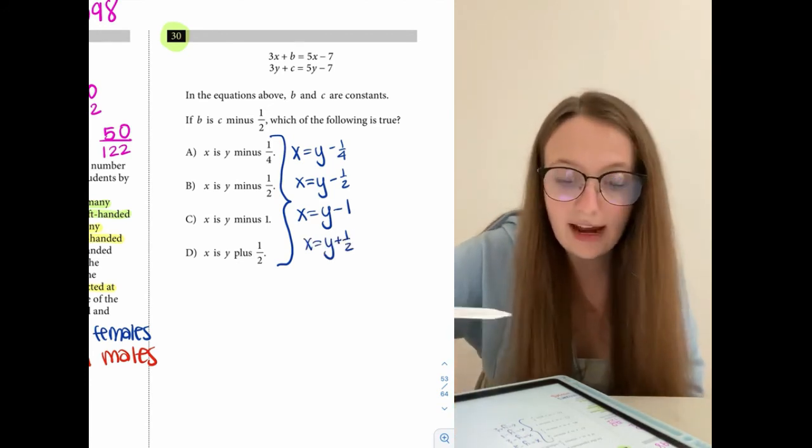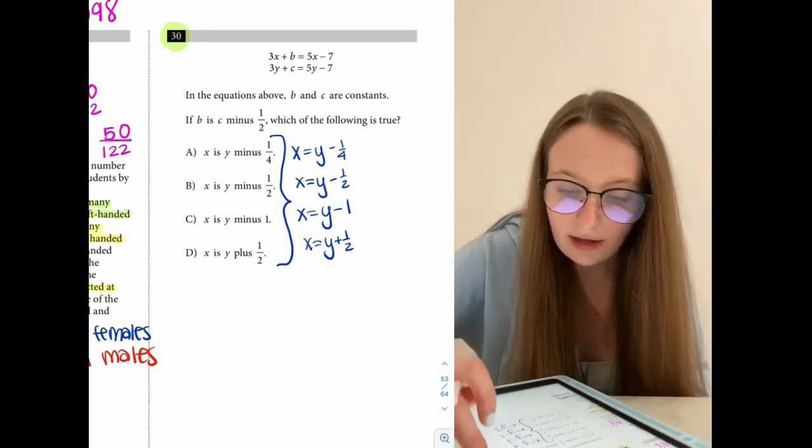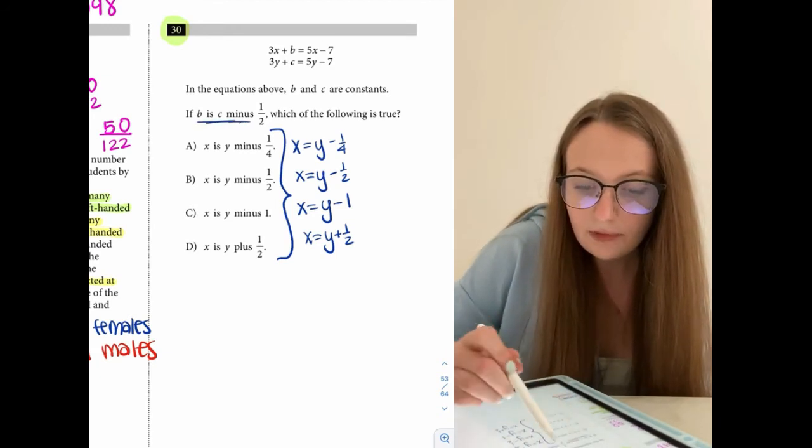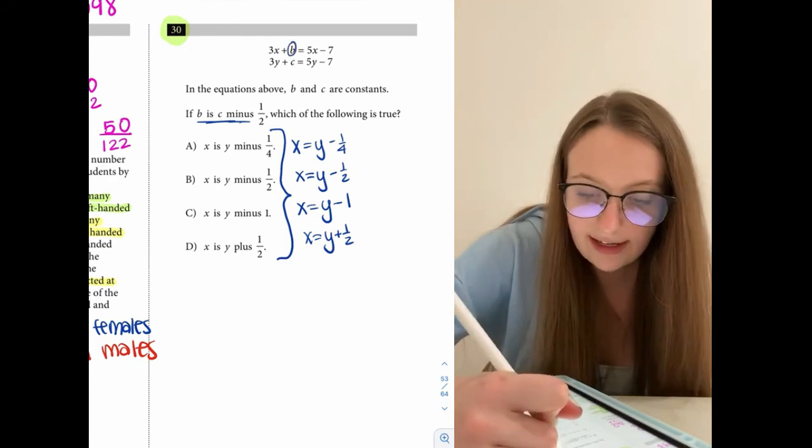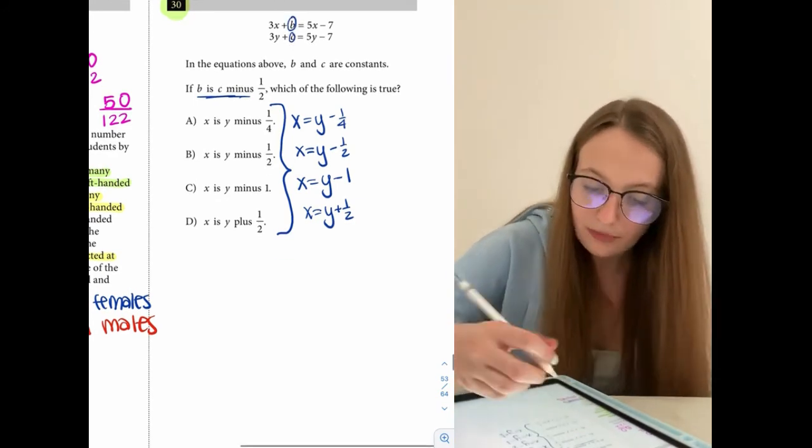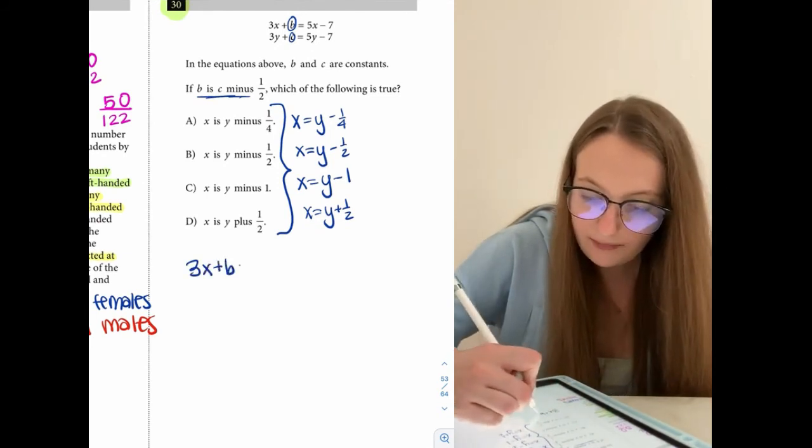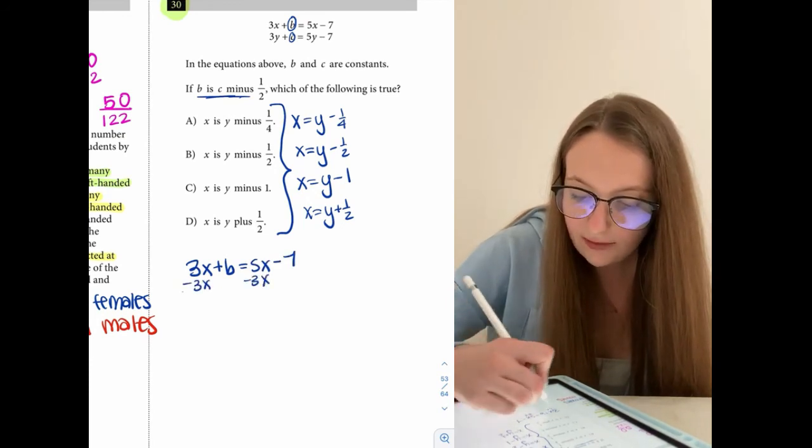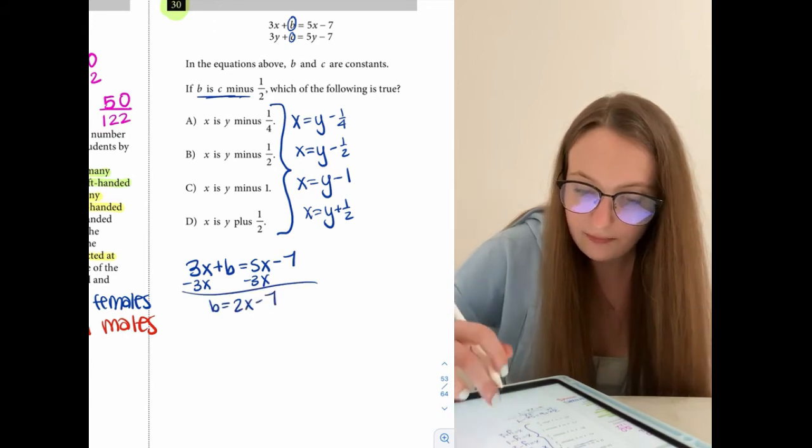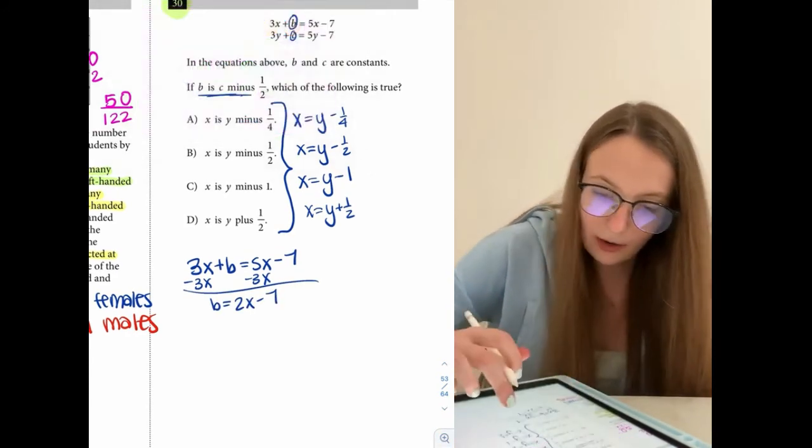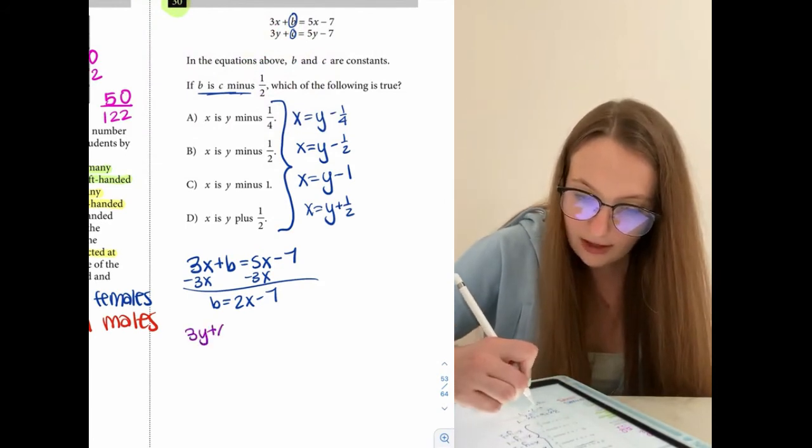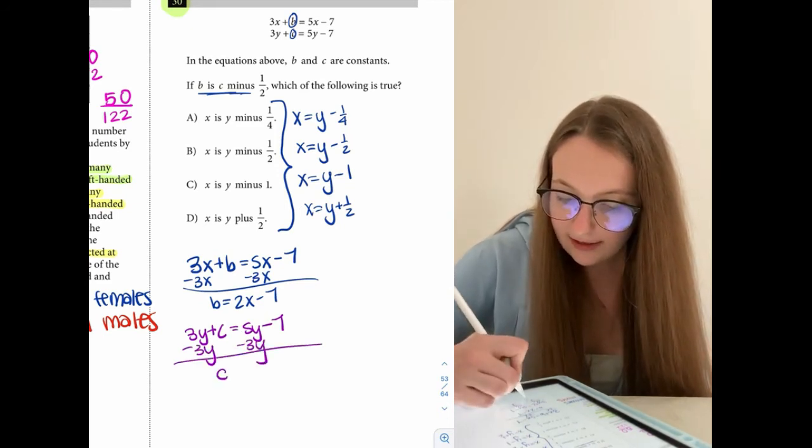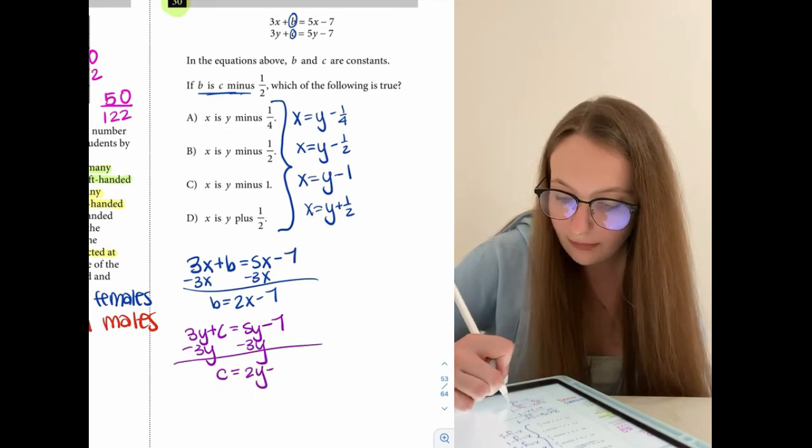So let's go ahead first. We know that we have some relationship with B and C. So let's go ahead and each of these two equations, let's isolate B in the top one and let's isolate C in the bottom one. So we have 3X plus B is equal to 5X minus 7. To get B alone, I'm going to subtract 3X from both sides. So I find then that B is equal to 2X minus 7. Let's go ahead and isolate C in the bottom one. So if 3Y plus C is equal to 5Y minus 7, subtracting 3Y from both sides, I find then that C is equal to 2Y minus 7.